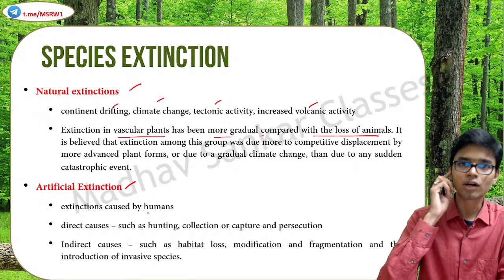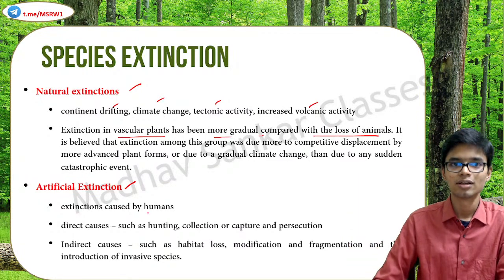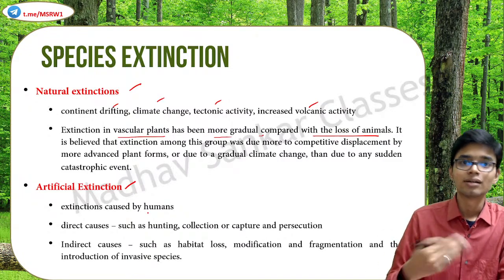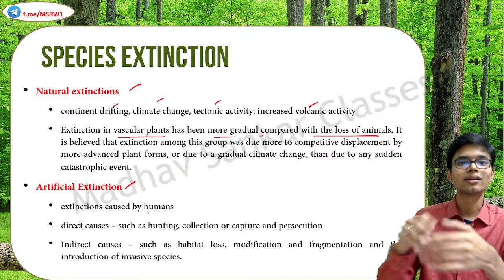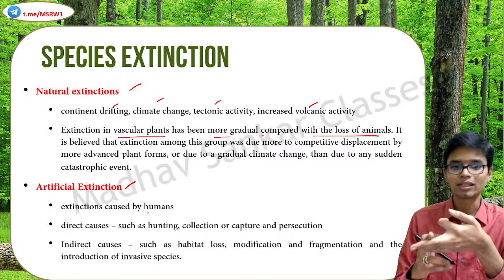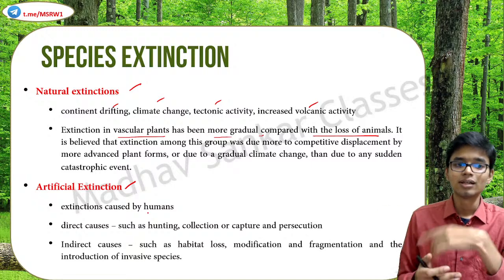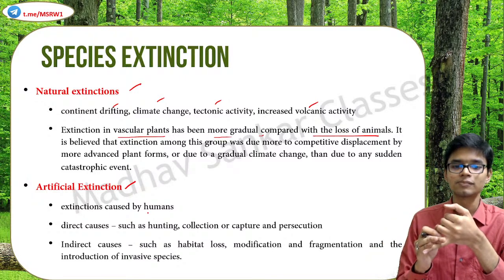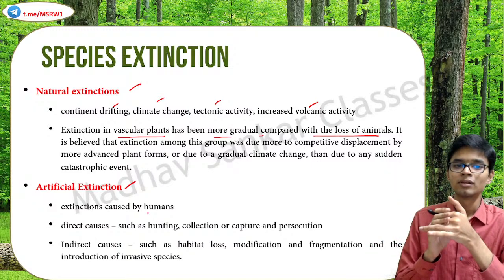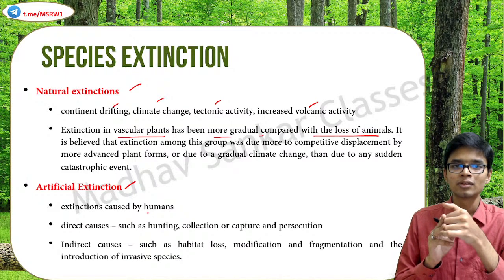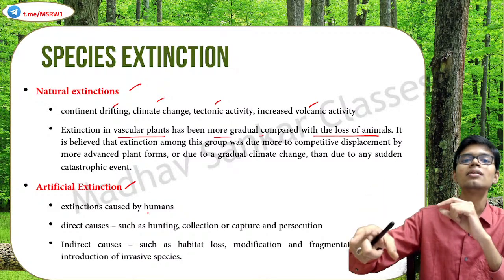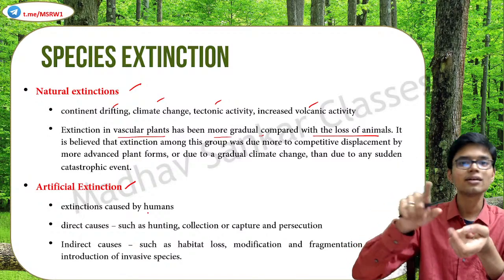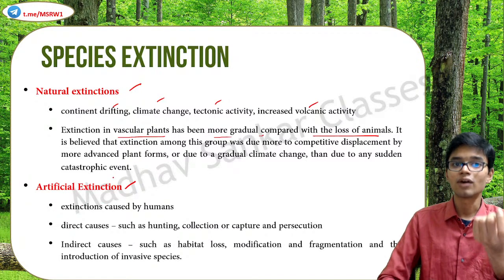Artificial extinction means man-made extinction caused by human contributions. This can be subdivided into two: direct causes, where human beings directly target the killing of an animal for hunting, collection, persecution, or capture; and indirect causes, where because of human actions the habitat is lost, there is modification in the environment, or invasive species arrive. In indirect causes we are not actually hunting that particular animal, but because we have changed or manipulated other factors, these animals or plants are getting affected.